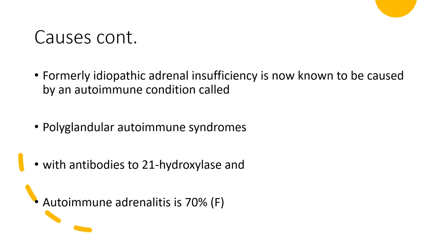Still on causes: formerly idiopathic adrenal insufficiency is now known to be caused by an autoimmune condition. In other words, in the early days of medicine, when physicians didn't know the cause, they called it idiopathic. But as research progressed, what was once called idiopathic adrenal insufficiency is now referred to as being caused by an autoimmune condition — specifically polyglandular autoimmune syndromes type 1 or type 2. With this, there will be antibodies to 21-hydroxylase, and there is a possibility of autoimmune adrenalitis in 70% of cases, predominantly found in females.